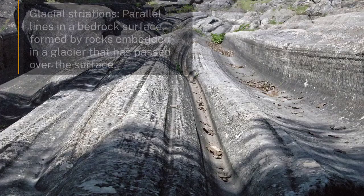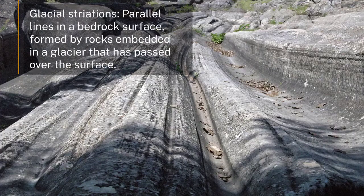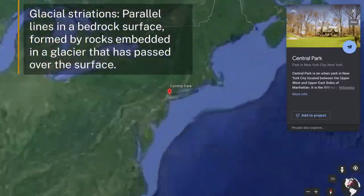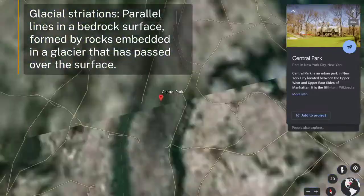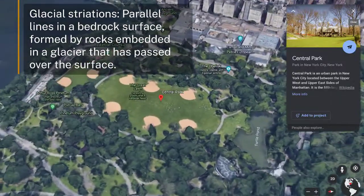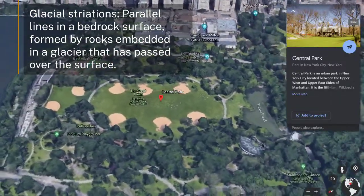There were kilometers of ice over North America and Northern Europe, all the way down to New York City. Central Park has glacial striations indicating there were kilometers of ice there. That's the kind of dramatic climate change that occurred over these thousands-of-years timescales.